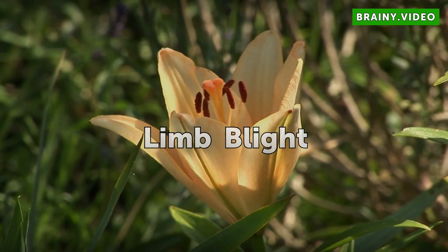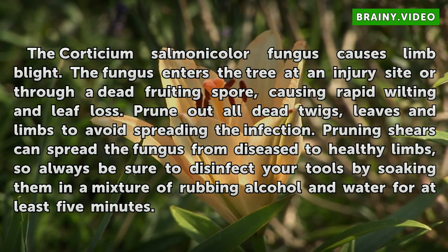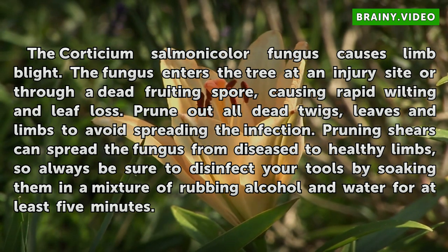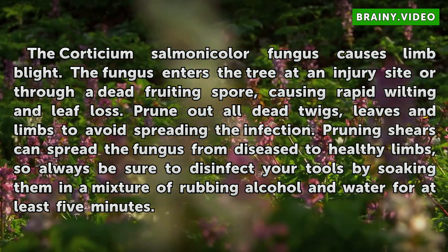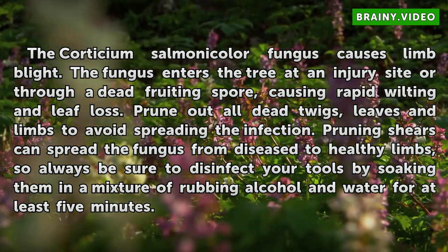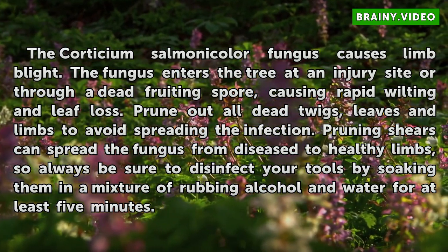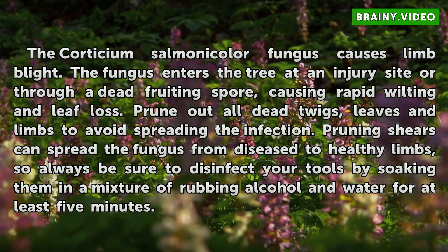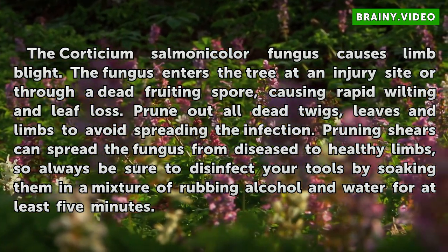The Cordyceum salmonicolor fungus causes limb blight. The fungus enters the tree at an injury site or through a dead fruiting spore, causing rapid wilting and leaf loss. Prune out all dead twigs, leaves and limbs to avoid spreading the infection. Pruning shears can spread the fungus from diseased to healthy limbs, so always disinfect your tools by soaking them in a mixture of rubbing alcohol and water for at least 5 minutes.